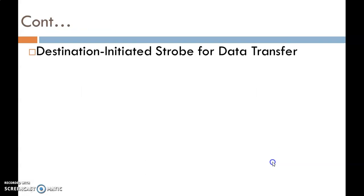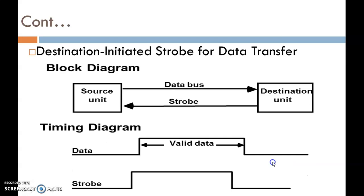The second type is Destination-Initiated Strobe for Data Transfer, meaning the Strobe signal is initiated by the destination unit. In the block diagram of this category, the Strobe signal is first initiated by the destination unit to inform the source unit that it is ready to receive the data, and to place the data on the data bus. After receiving the Strobe signal from the destination unit, the source unit places the data on the data bus.